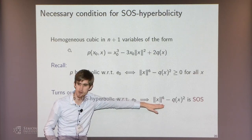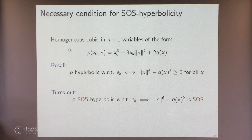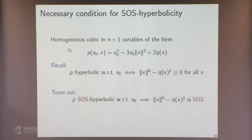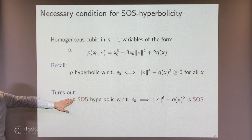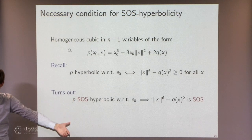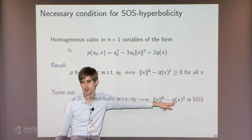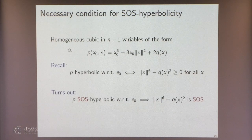Going back to SOS-hyperbolicity for cubics: we've seen that for cubics in this particular form, being hyperbolic with respect to the first coordinate direction is equivalent to a certain expression being globally non-negative. If P is SOS-hyperbolic with respect to the first coordinate direction, then this expression should actually be a sum of squares—it's the determinant of the Hankel matrix, and if that Hankel matrix is a matrix sum of squares (which is really my condition), then this determinant will be a sum of squares.